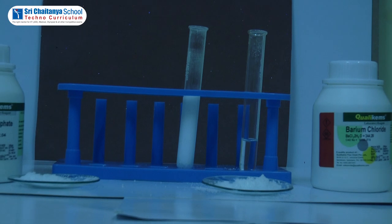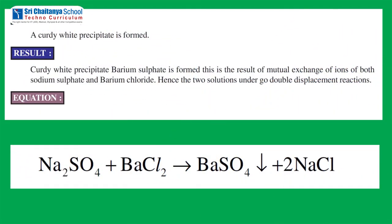So, the equation of this reaction is: Na2SO4 plus BaCl2 gives rise to BaSO4 plus 2NaCl.